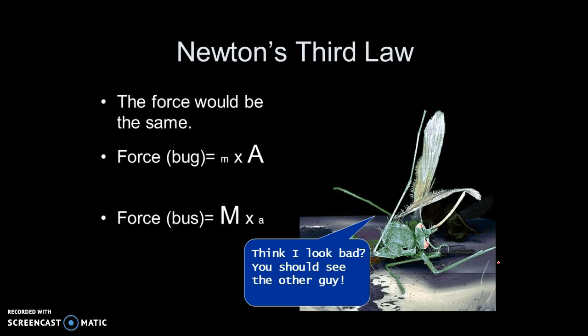The force on the bug and the force on the bug on the bus and the bus on the bug is the same. What changes is the mass and the acceleration. The bug's mass is so insignificant. So when it hits the bus, the change in the bug's acceleration is huge. That bug was probably going .5 meters per second. So to hit a bus going down the highway, it's going to go from .5 meters per second to negative 100 meters per second, or whatever the bus is traveling at. So this number is going to be huge.